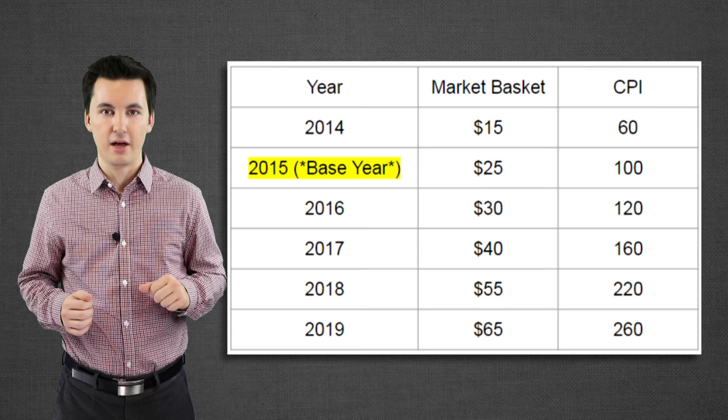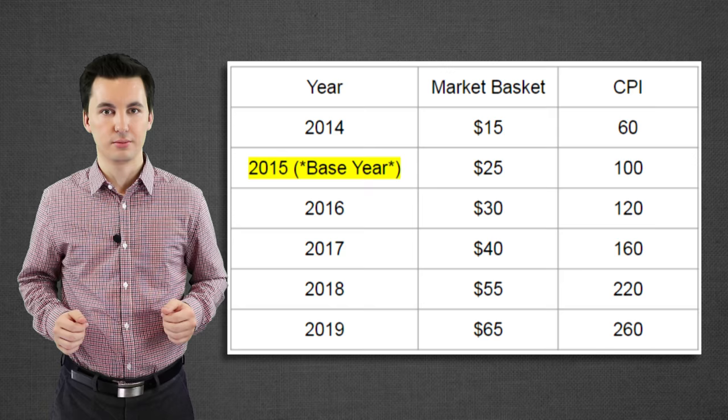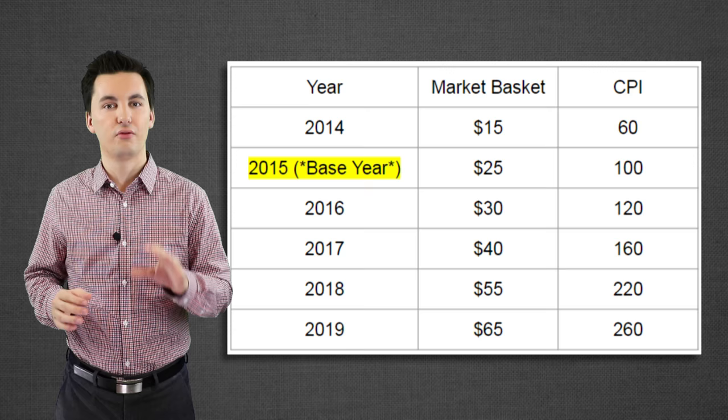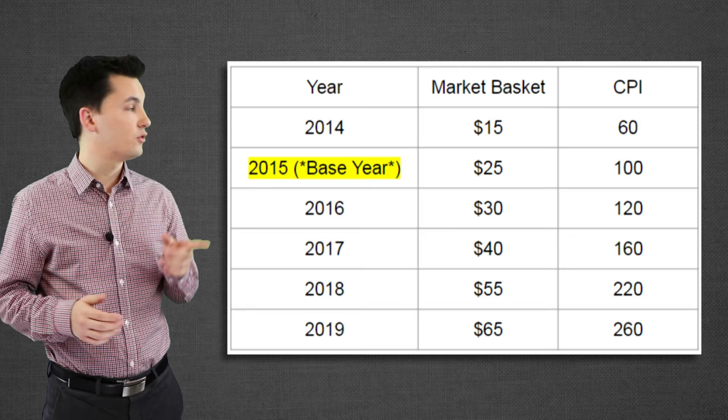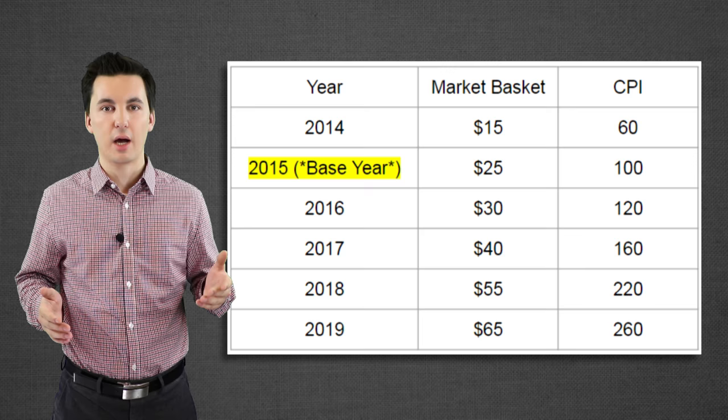The next thing we're going to cover is how to find an inflation rate between years. The CPI is showing us what's happening relative to the base year. One other thing to note: if we ever go below 100 — like we can see for 2014 — we're actually seeing deflation. Our value is going the opposite way. Instead of losing purchasing power, we're actually gaining purchasing power — our money is worth a little bit more.